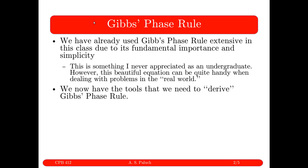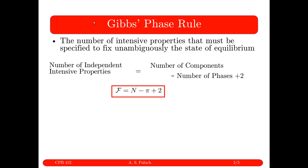We've used the Gibbs Phase Rule extensively throughout this course, and now our goal is to derive it. To remind you what the Gibbs Phase Rule is: it tells you the number of intensive, independent thermodynamic properties that need to be specified to fix unambiguously the thermodynamic state of a system. F, the number of independent intensive properties, is equal to N minus pi plus 2.